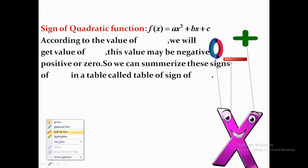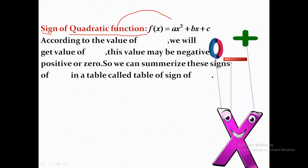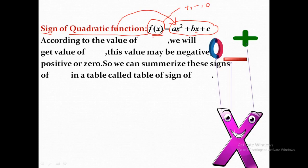Our title is the sign of a quadratic function. A quadratic function has the form f(x) = ax² + bx + c. This f(x) has a sign which is maybe positive, maybe negative, maybe zero. When we substitute a value of x, this gives a value of f(x), which may be positive, negative, or zero. Every x gives a new f(x), and every f(x) has a sign. We will now know how to make a table to summarize the sign of f(x).